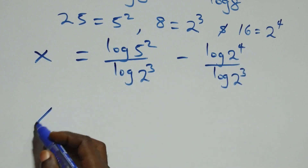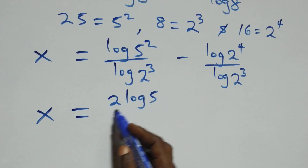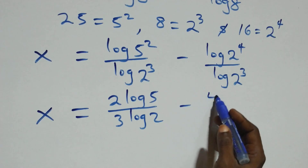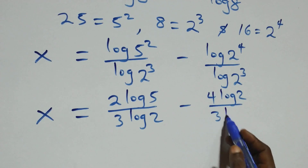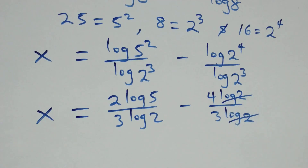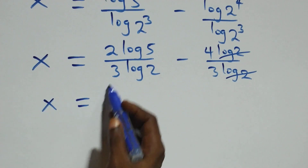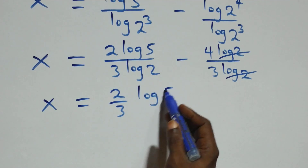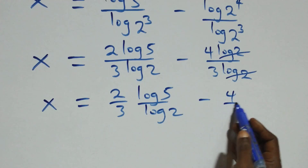Here we apply the power law of logarithms: the exponent 2 comes down, the 3 comes down here, and the 4 and 3 come down there. We now have x equals 2 log 5 over 3 log 2, minus 4 log 2 over 3 log 2. In the second fraction, log 2 cancels, giving us 2 log 5 over 3 log 2 minus 4 over 3.